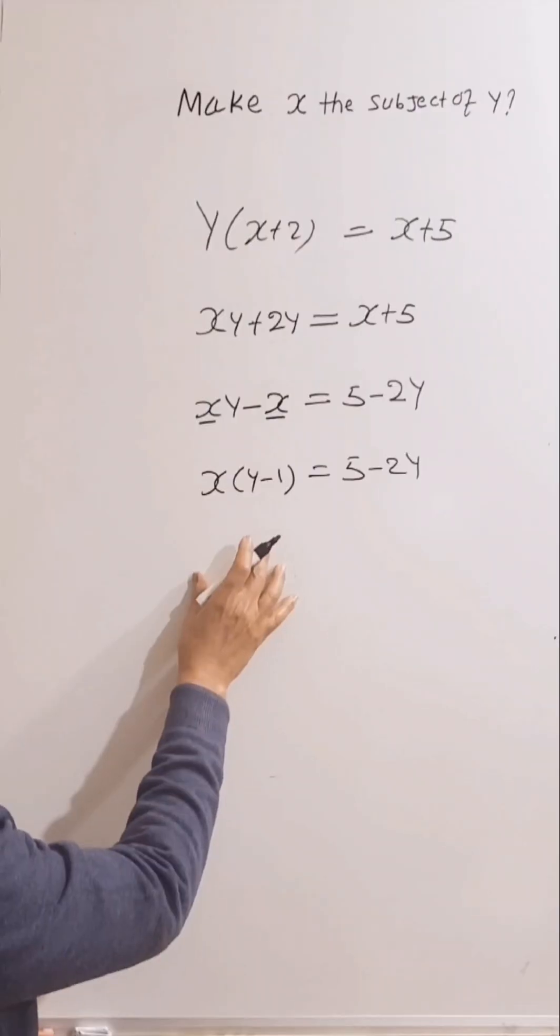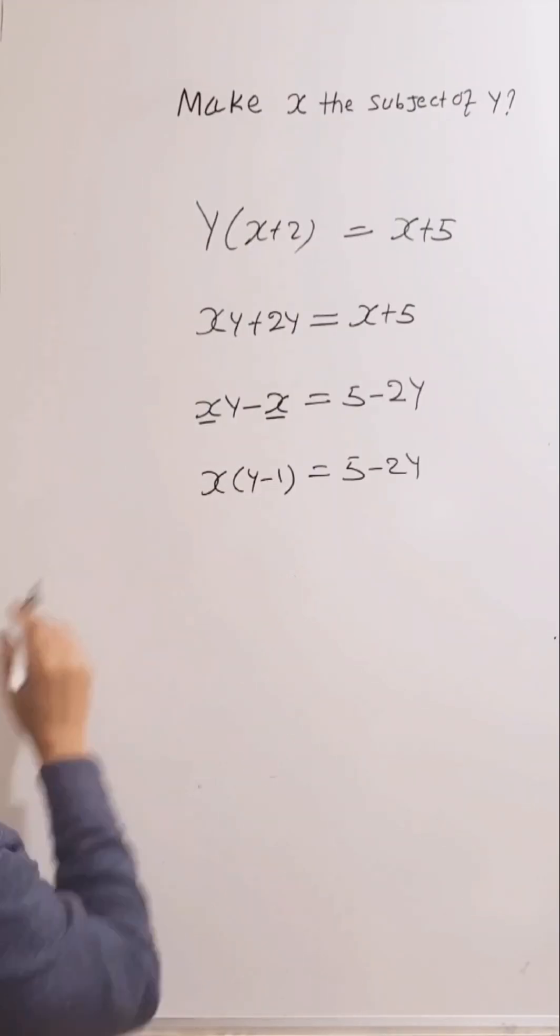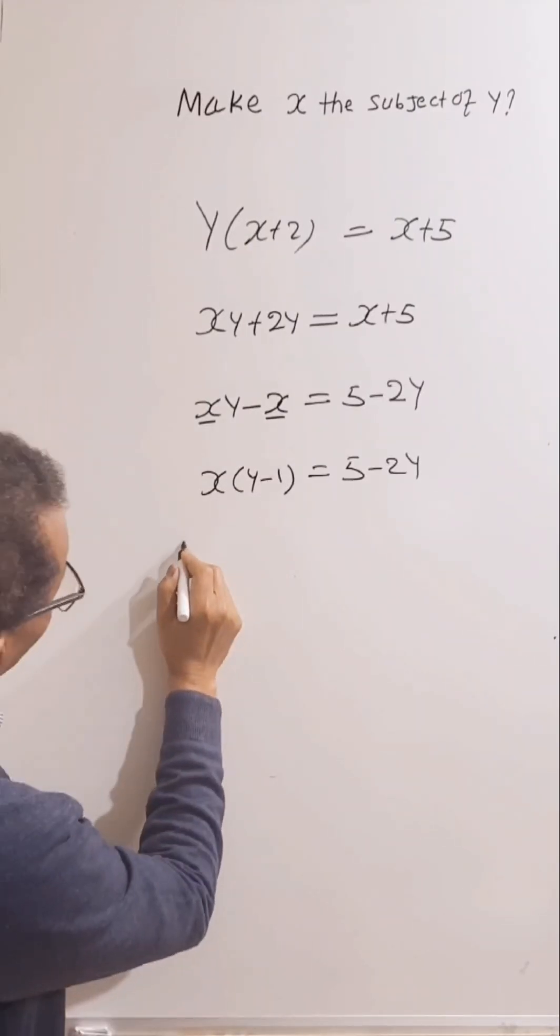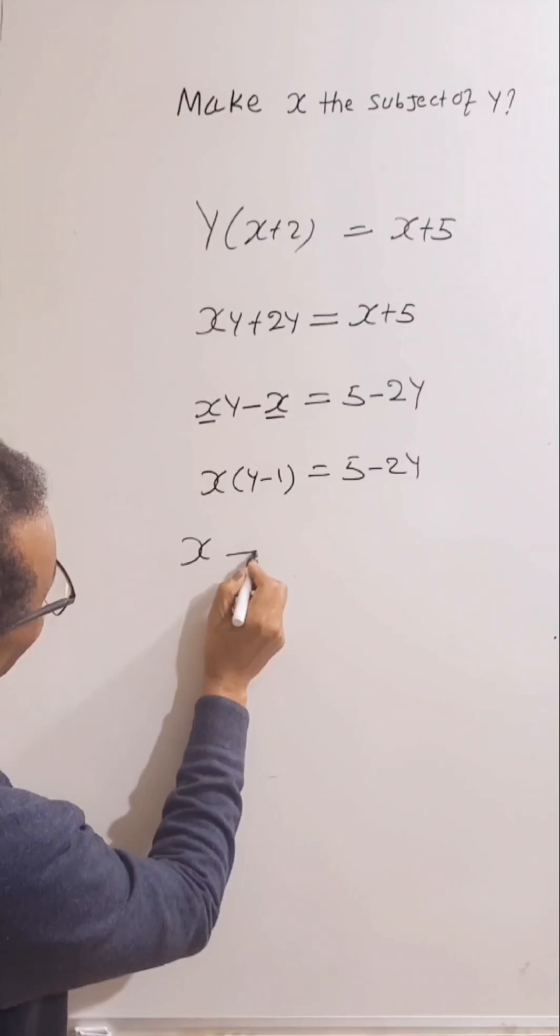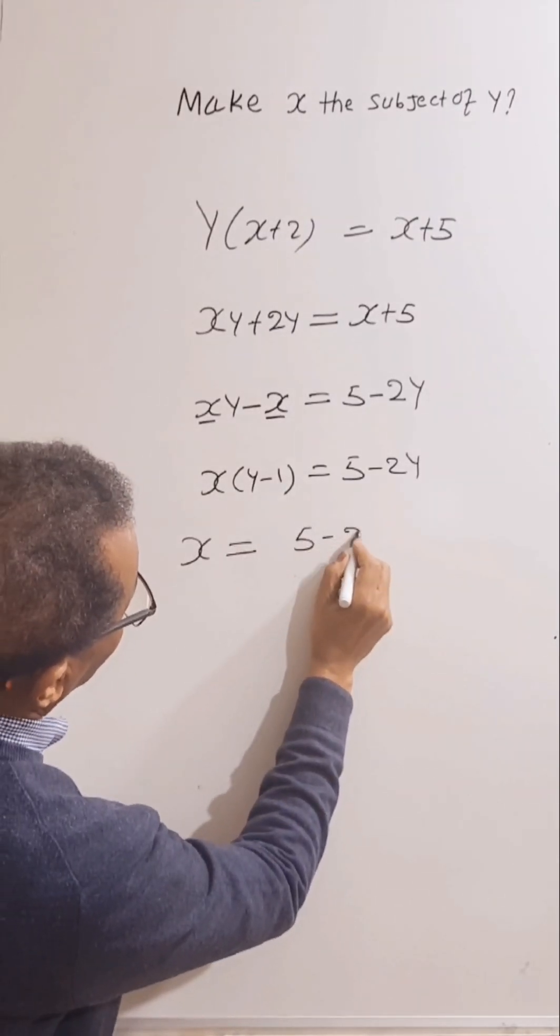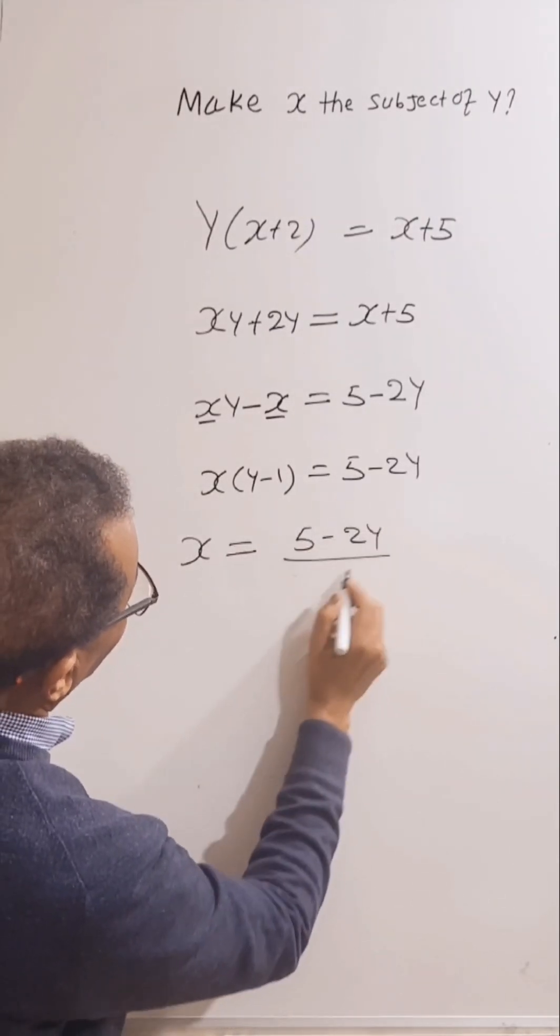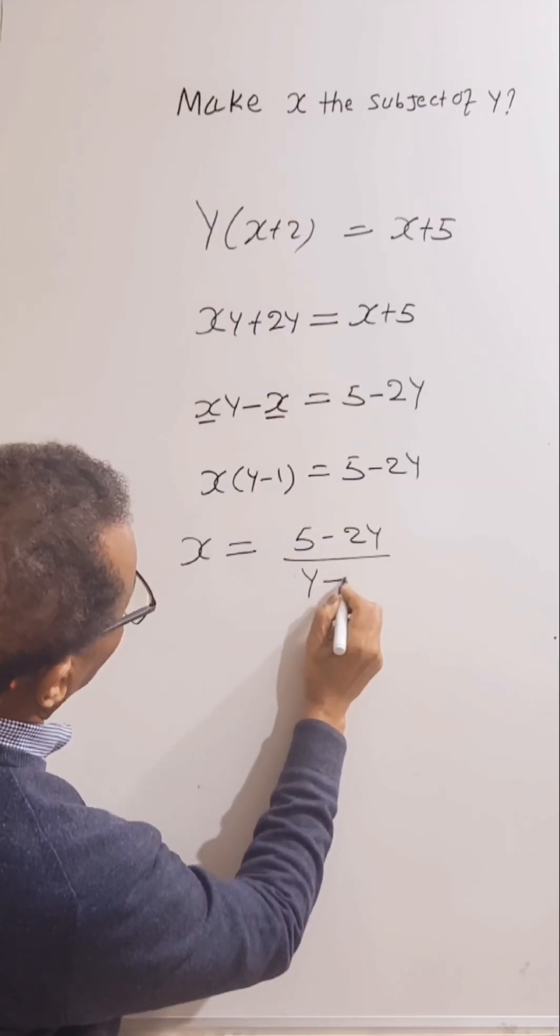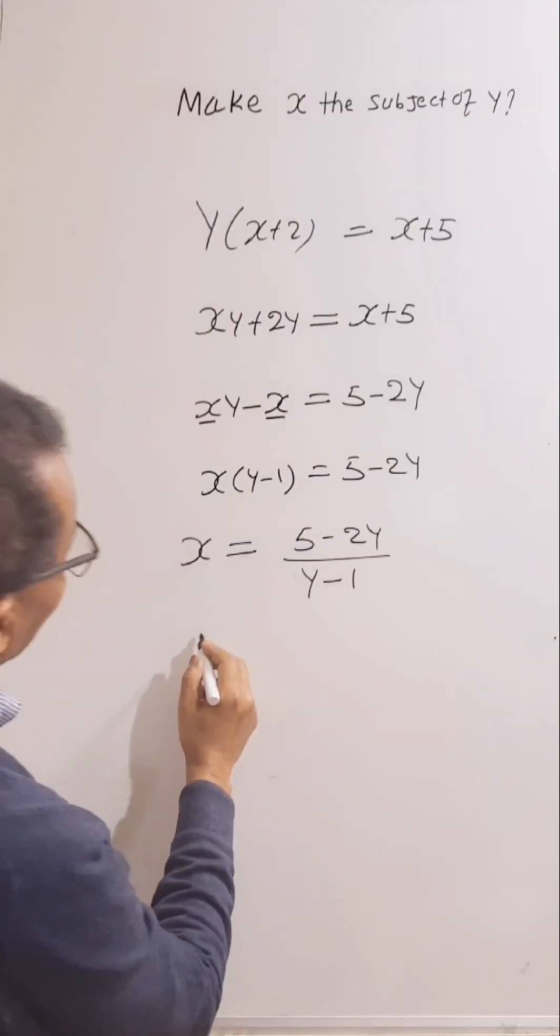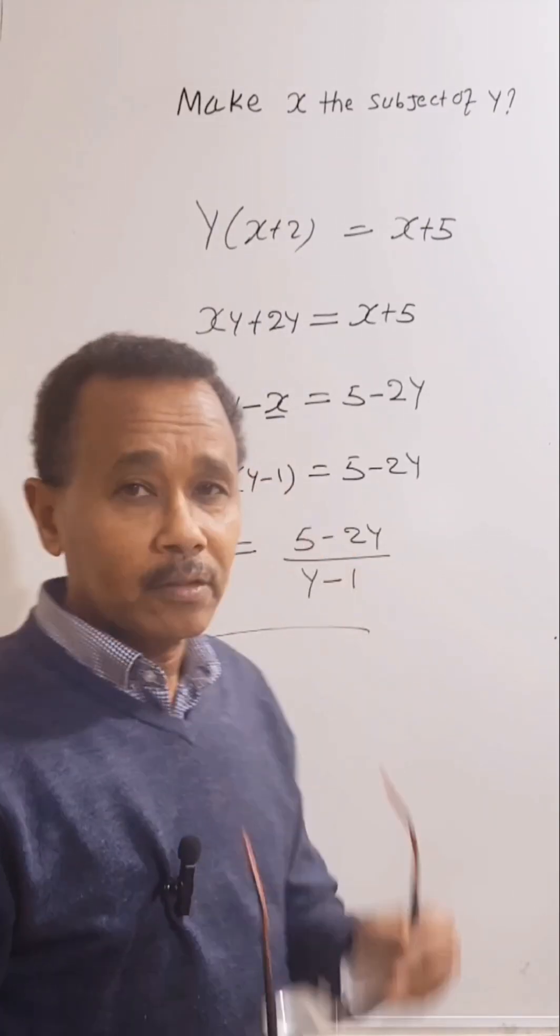So from here, we can make x the subject. x equal 5, take away 2y, over y, take away 1. Thank you very much.